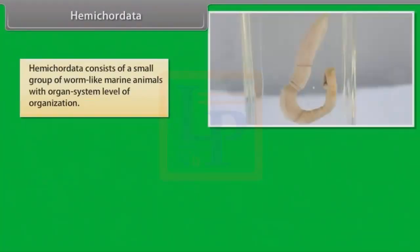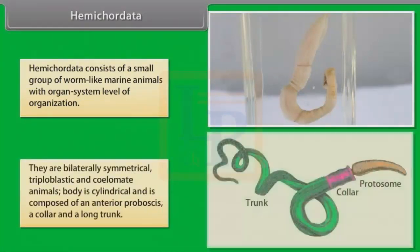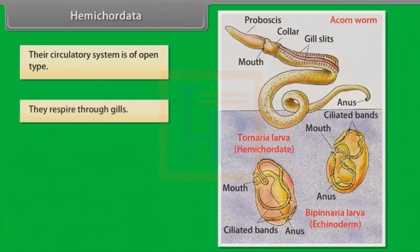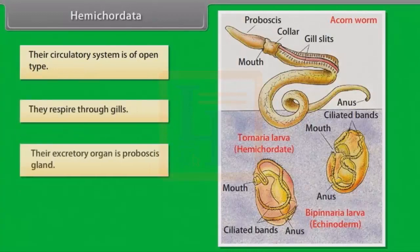Hemichordata consists of a small group of worm-like marine animals with organ system level of organization. They are bilaterally symmetrical, triploblastic and coelomate animals. Body is cylindrical and is composed of an anterior proboscis, a collar and a long trunk. Their circulatory system is of open type. They respire through gills. Their excretory organ is the proboscis gland.